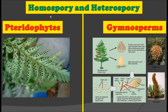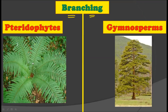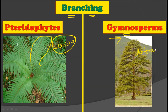The next difference is about homospory and heterospory. Pteridophytes generally show both types of spores — both homosporous and heterosporous plants are present among pteridophytes. On the other hand, gymnosperms strictly show heterospory. Regarding branching, pteridophytes show dichotomous branching, while in gymnosperms it is lateral branching. So in gymnosperms you find lateral branching while in pteridophytes you find dichotomous branching — an important morphological difference.